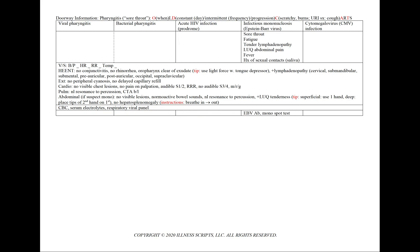In infectious mononucleosis caused by the Epstein-Barr virus, we'll see sore throat, fatigue, tender lymphadenopathy, and left upper quadrant abdominal pain, fever, and a history of sexual contacts or exchange of saliva such as through kissing. We'll include an EBV antibody and a monospot test.